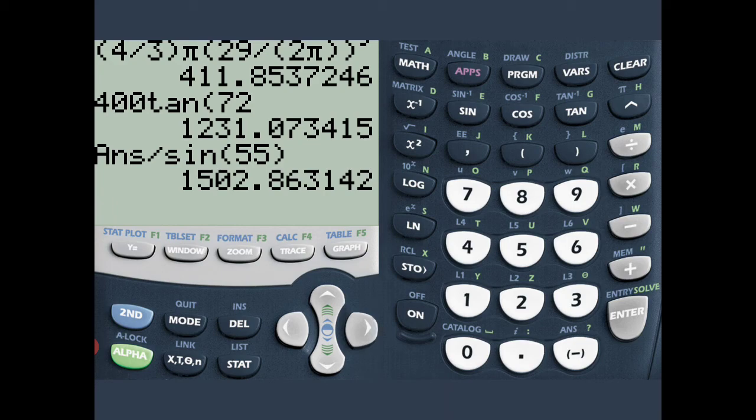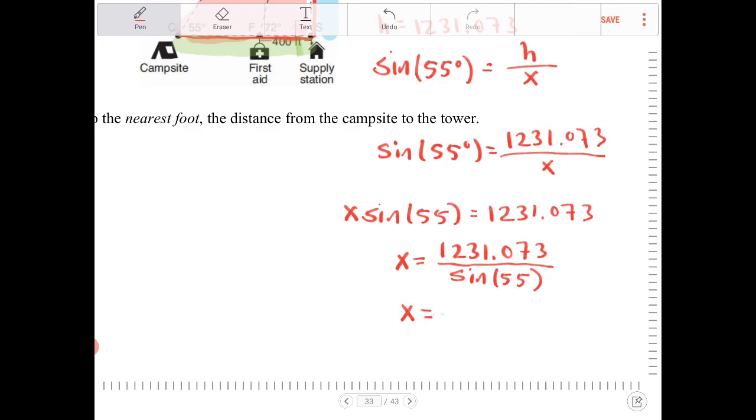So X will be 1502.86. So to the nearest foot, it would be 1503 feet. So X will equal to 1503 feet.